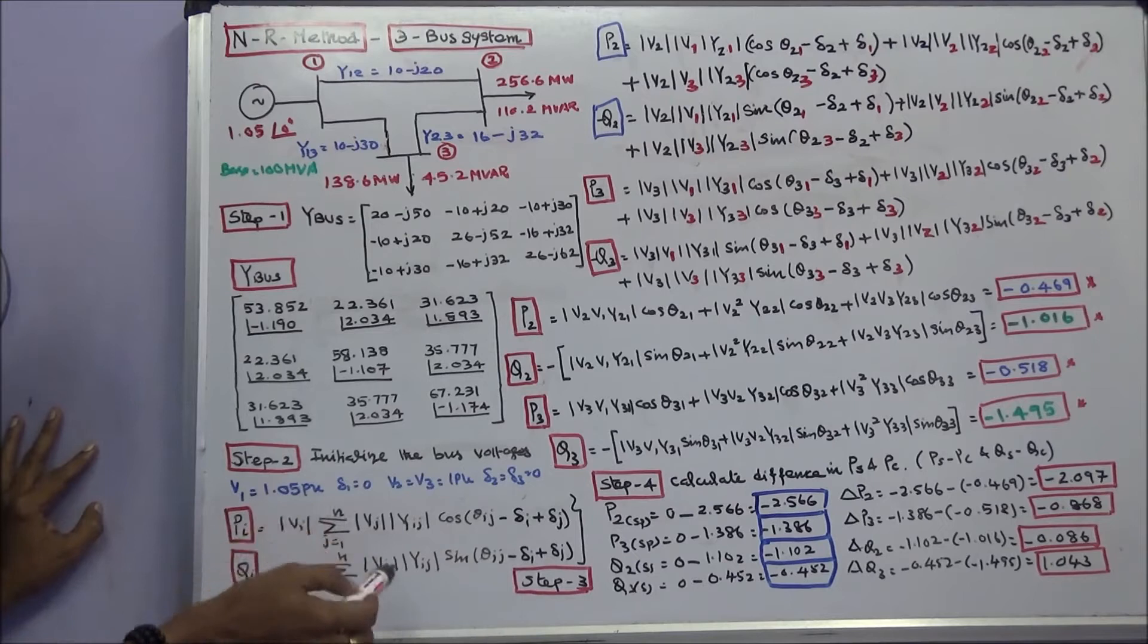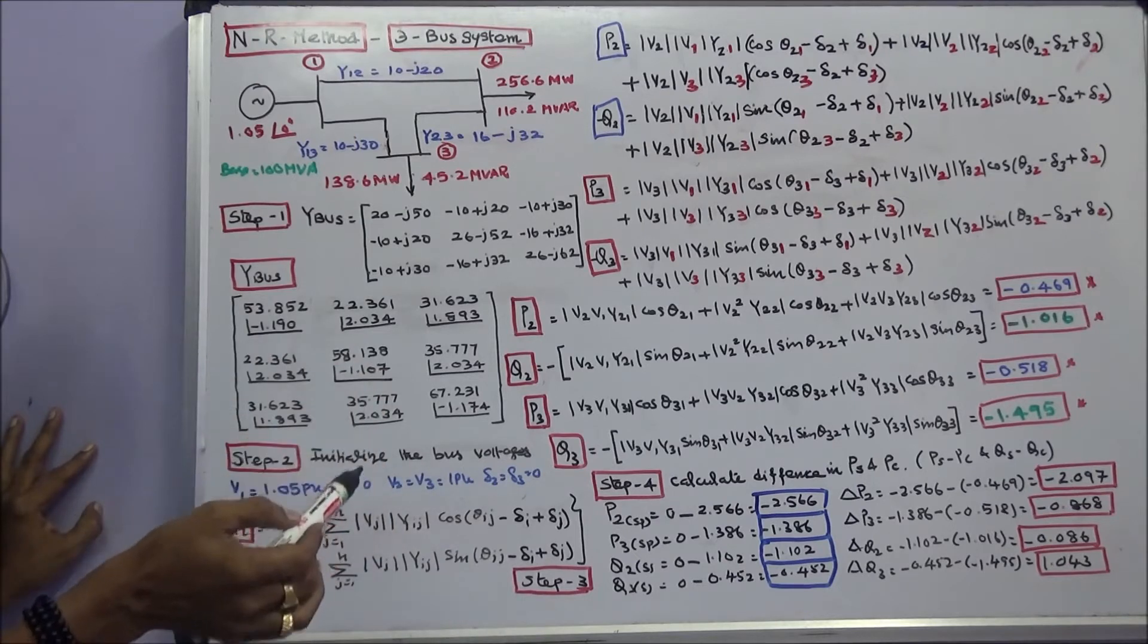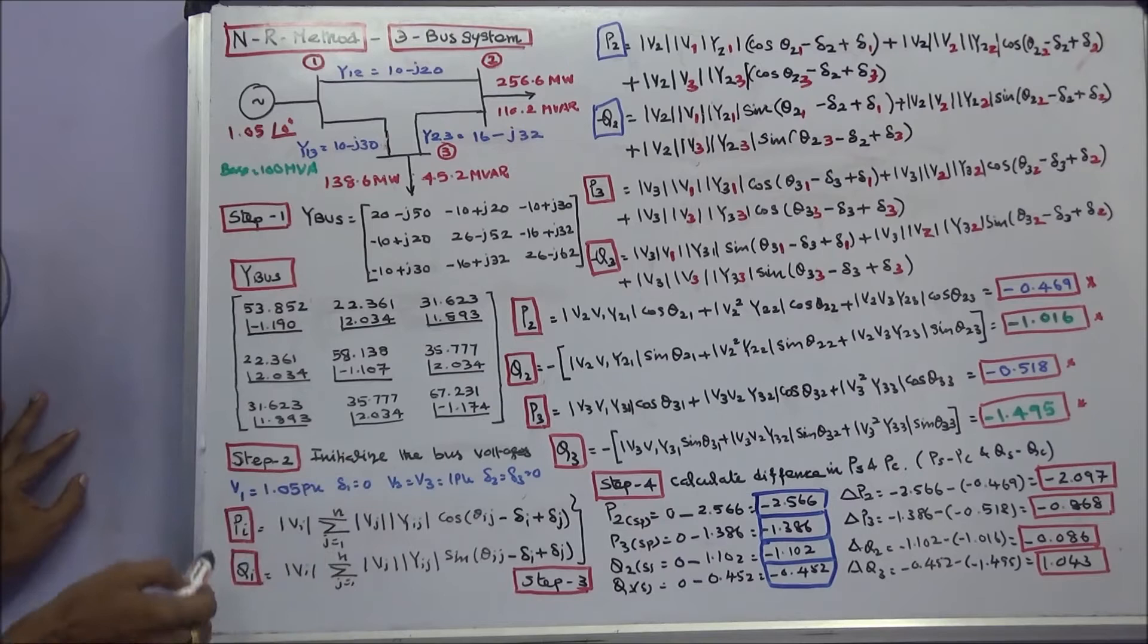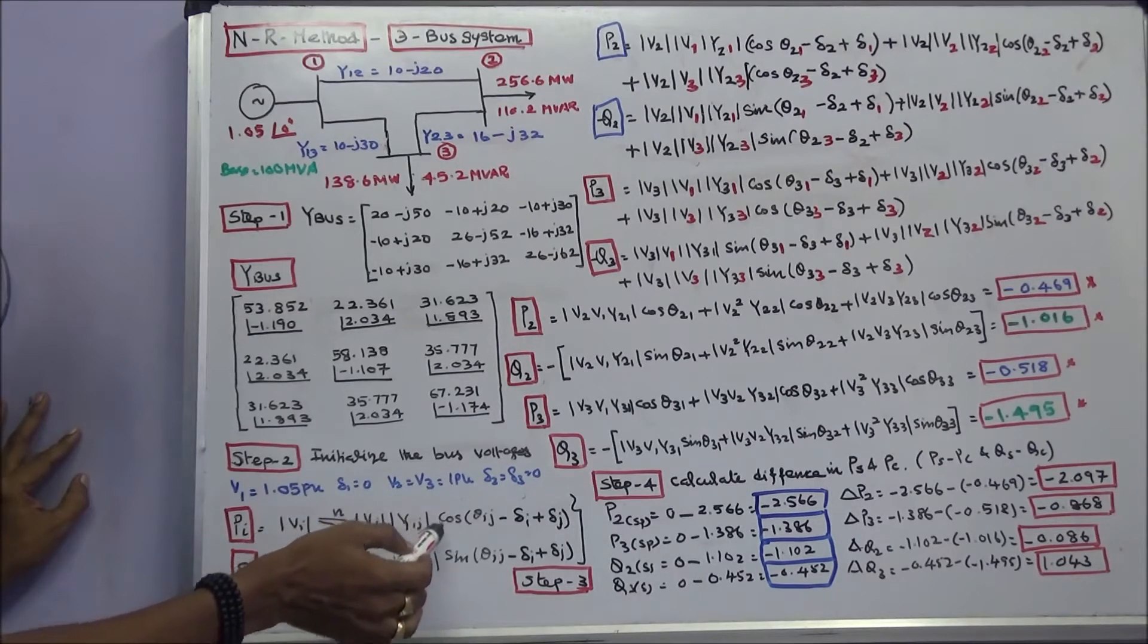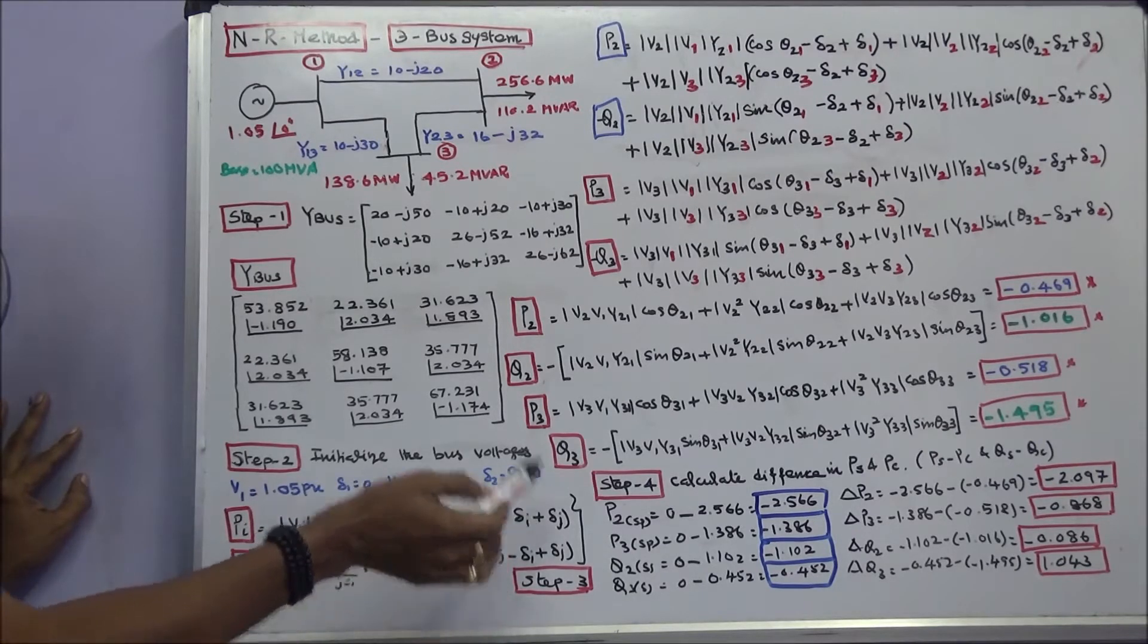Third step we have to find the P2, Q2, P3 and Q3. The general formula is PA is equal to modulus of VI, sigma J is equal to 1 to N, modulus of VJ, YIJ, cos theta IJ minus delta I plus delta J.